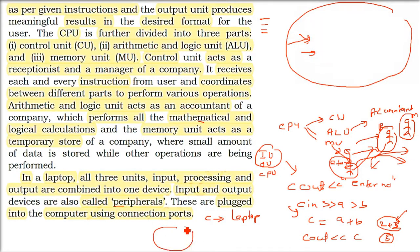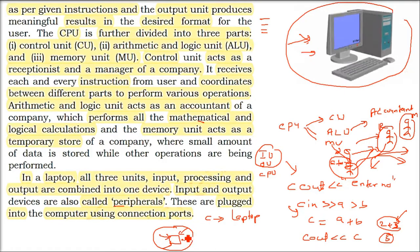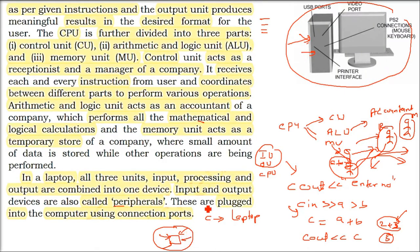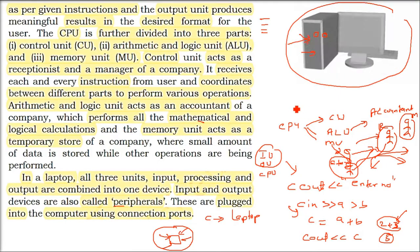Periphery means, peripheral has come from the word periphery. Periphery is basically the boundary. So you have in center your device, computing device, all other things which can be connected to this boundary or in this periphery, which can be connected, they are called as peripheral devices. They are plugged into the computer and there are different connection ports.